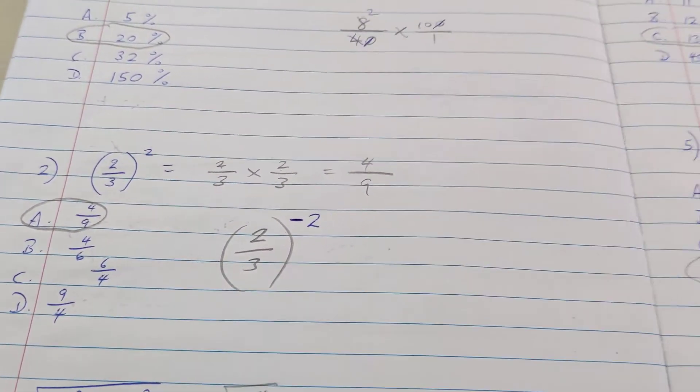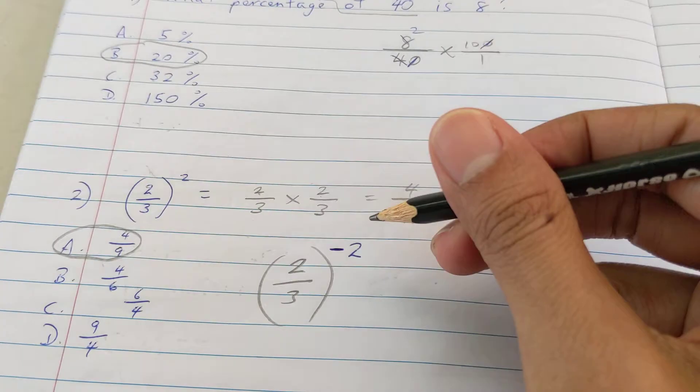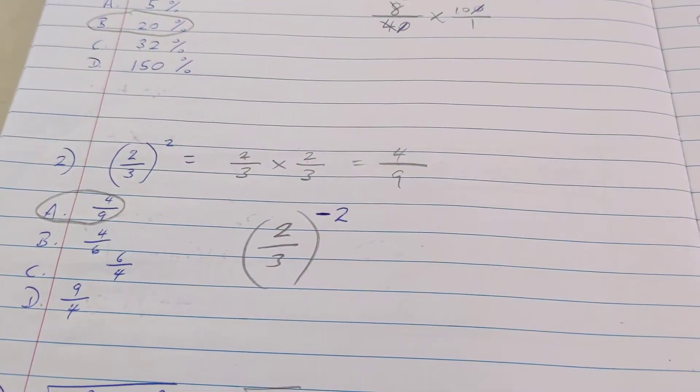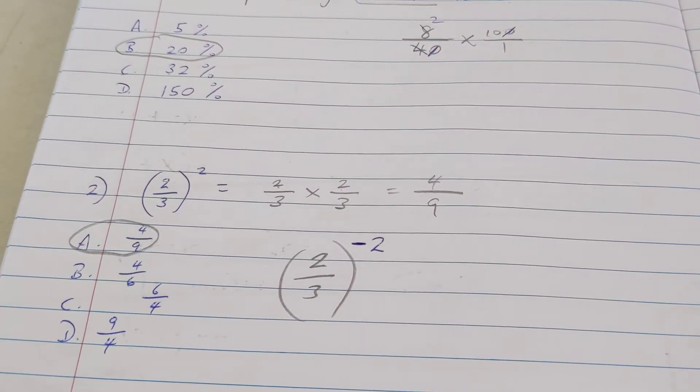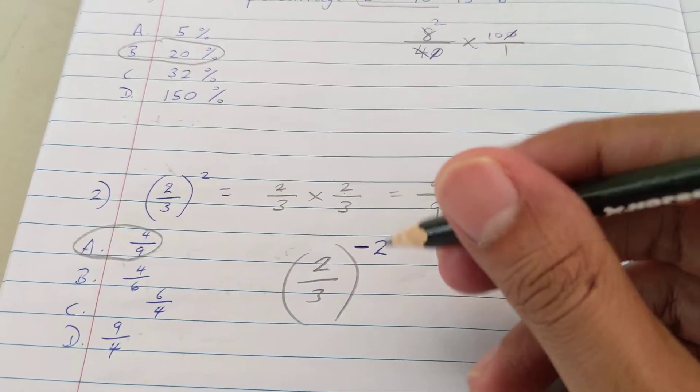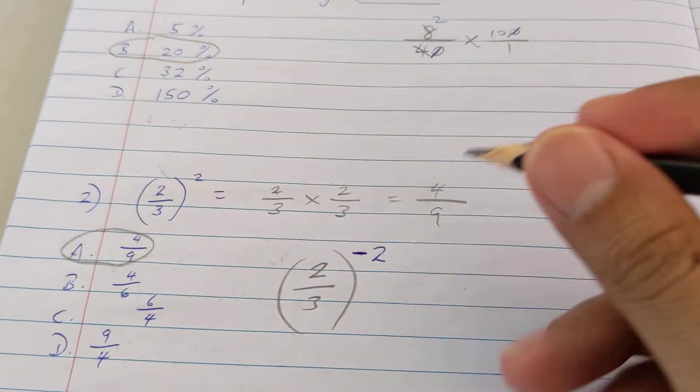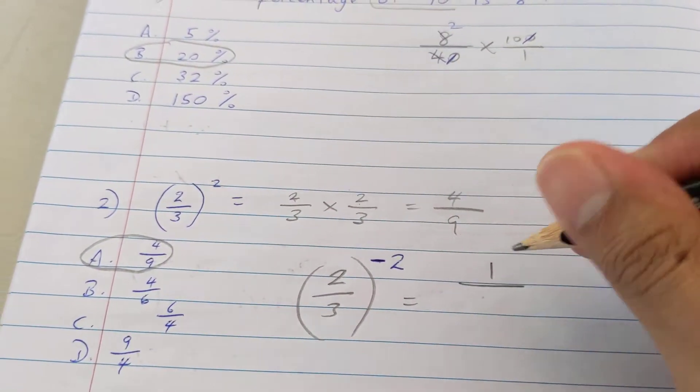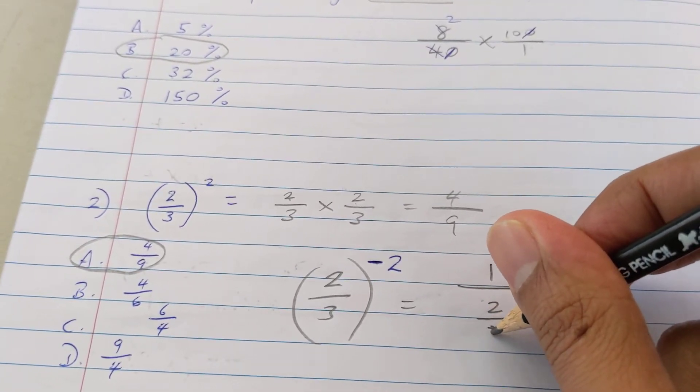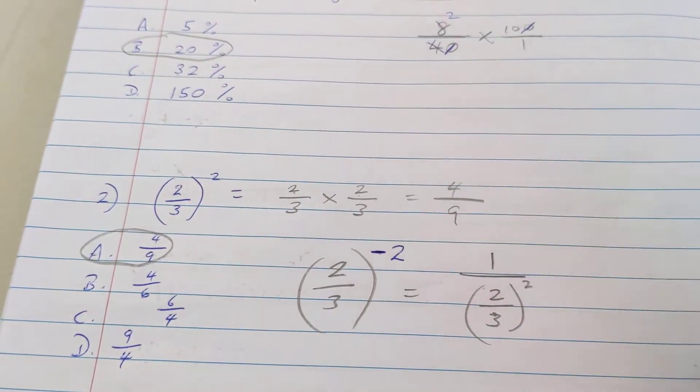The question is not two-thirds squared. The question is two-thirds to the minus two. The minus two is written so small I didn't notice it. When something has a minus power, that really means one over whatever. That comes from indices.